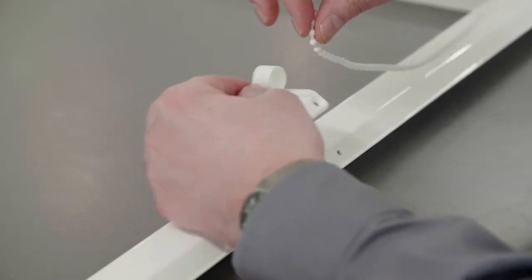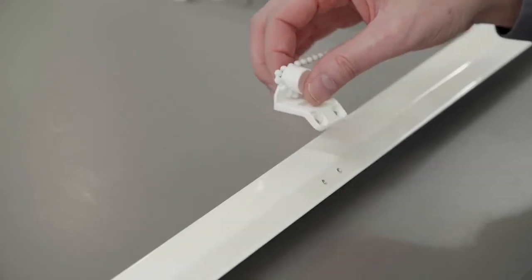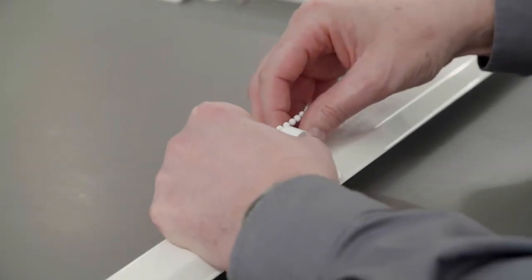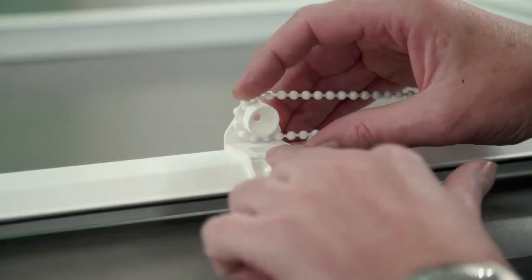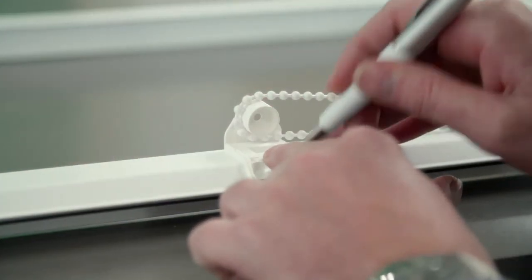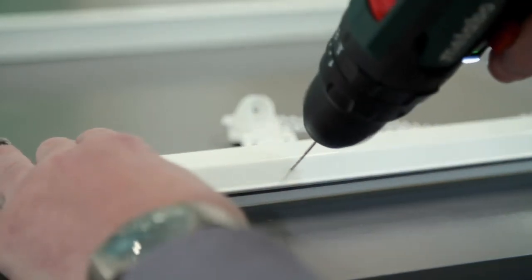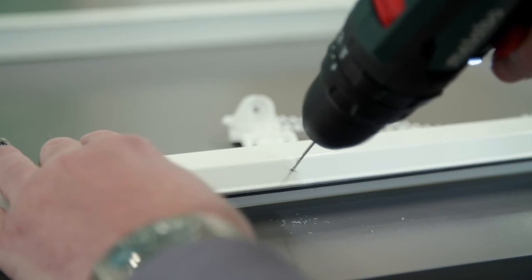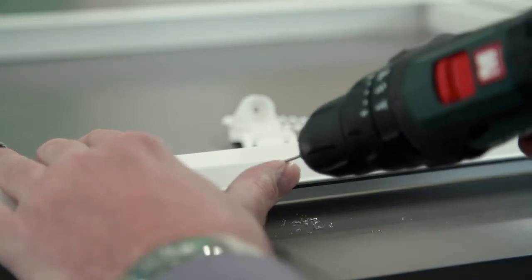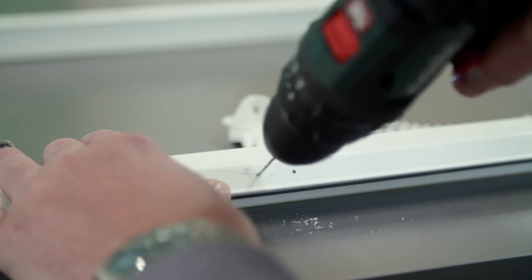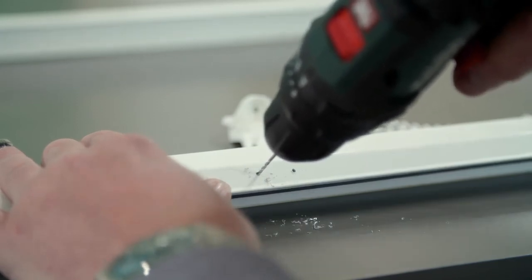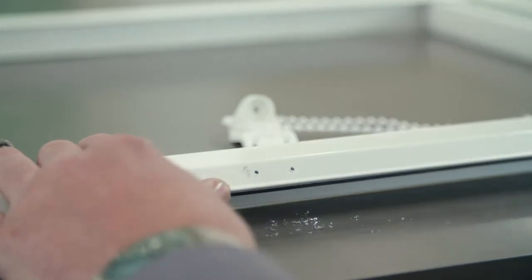Take the chain tidy and pass the chain around the chain tidy. Mark the position of the holes. With a 1.5mm drill bit, drill the holes. With the screws provided, screw the chain tidy to the frame.